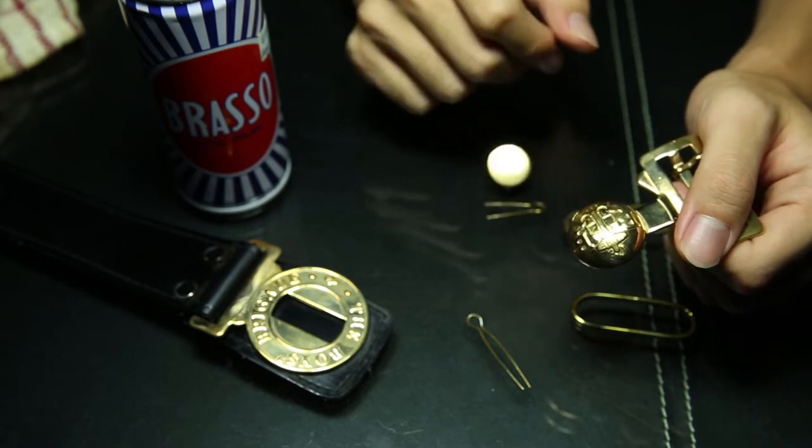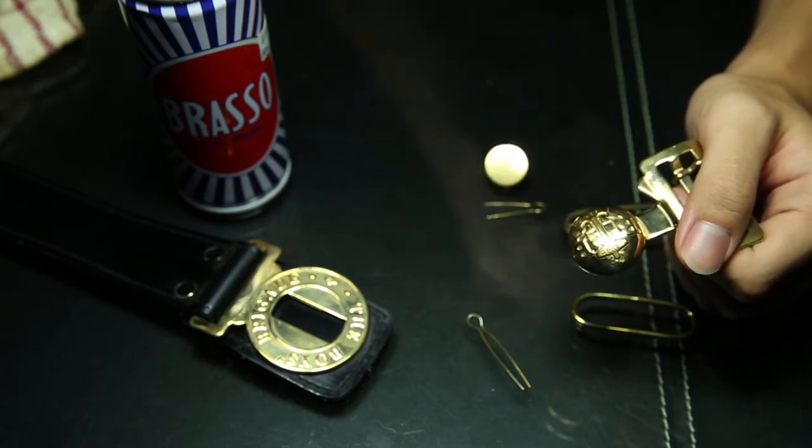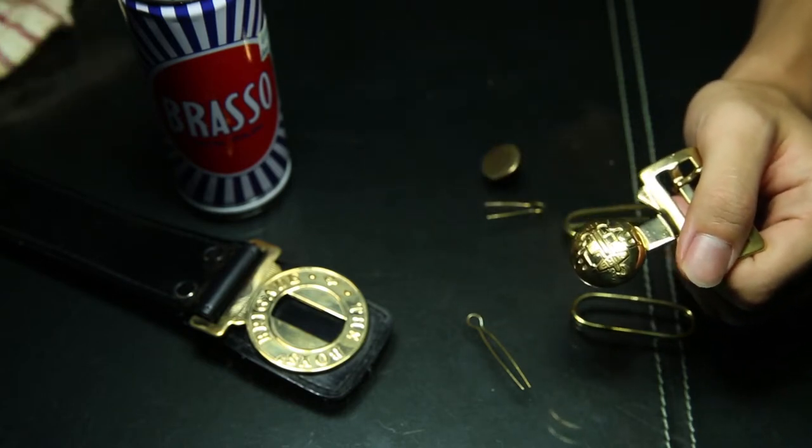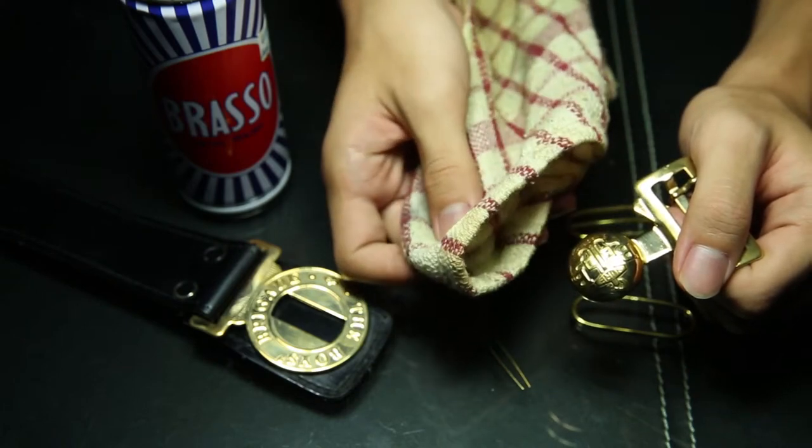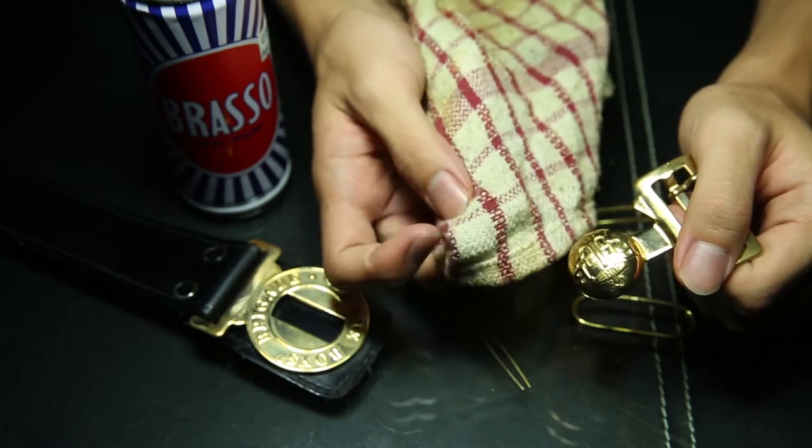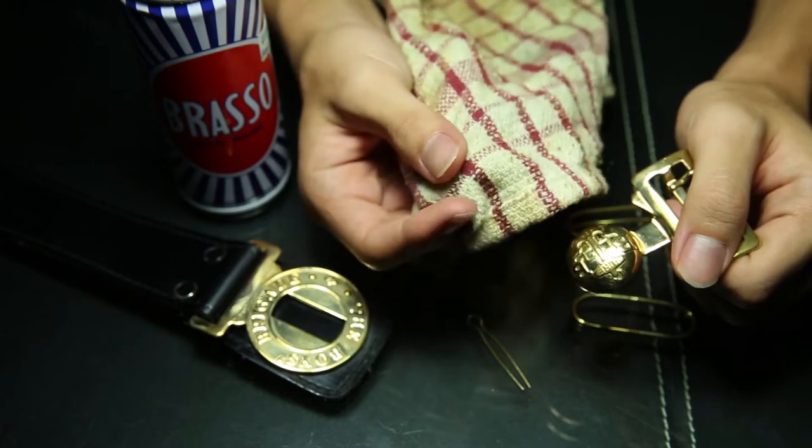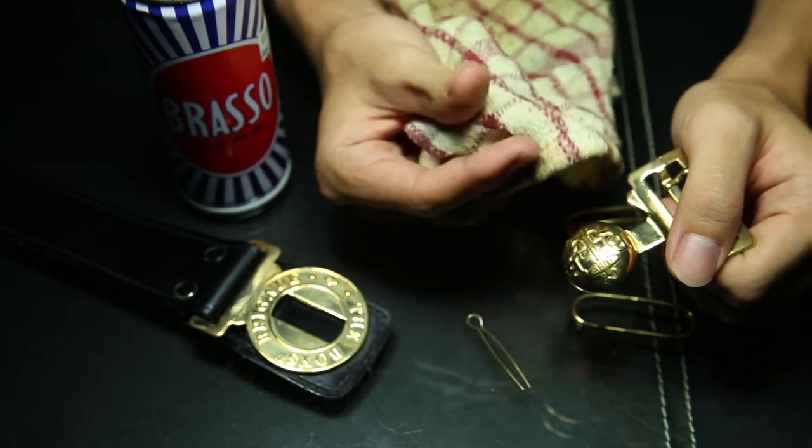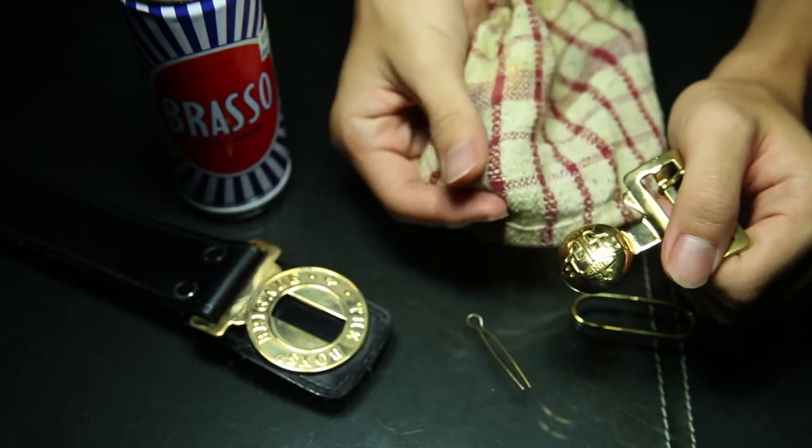We will first start by polishing the belt buckle. When polishing metal parts, you will need a rough cloth. This can be found in any supermarket, just look for kitchen cloths which are mostly all rough. The rougher the cloth, the better the results.